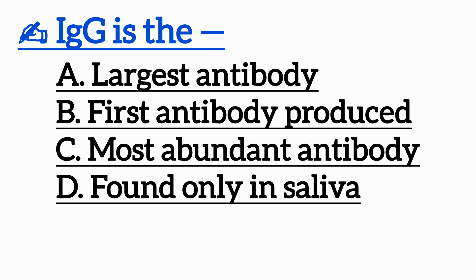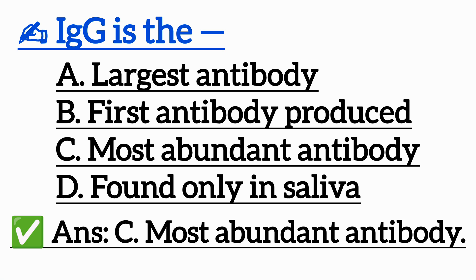Question 9: Immunoglobulin G is the — Option A: Largest antibody, Option B: First antibody produced, Option C: Most abundant antibody, Option D: Found only in saliva. Correct answer is Option C: Most abundant antibody.